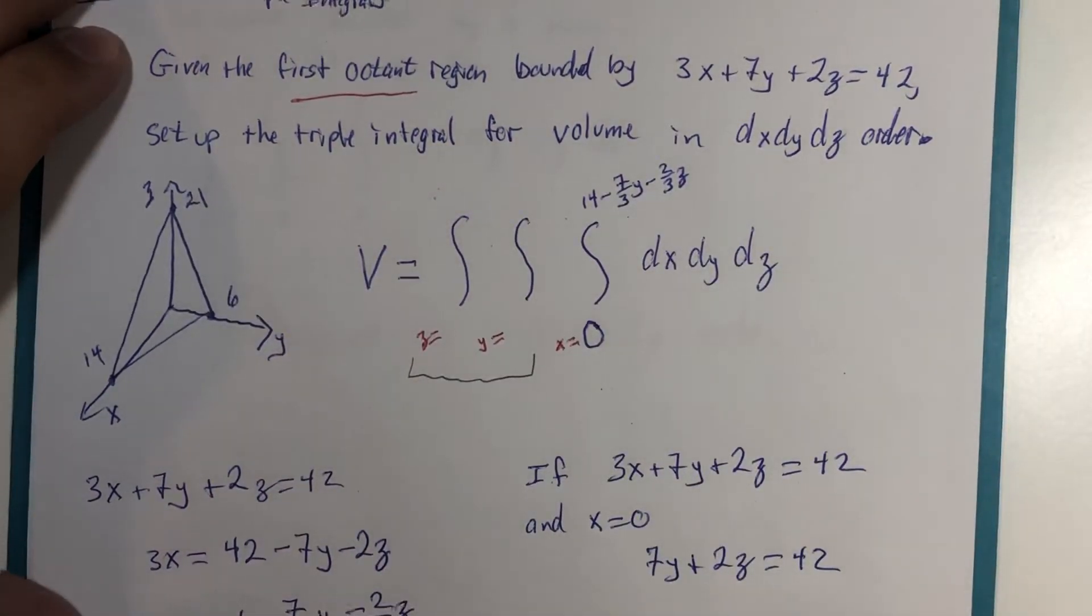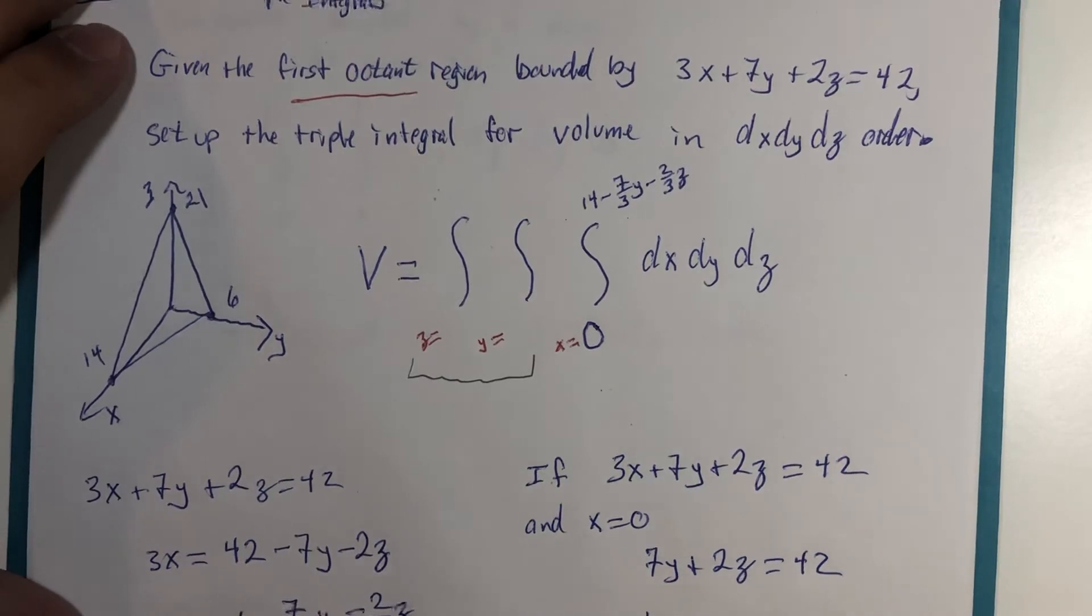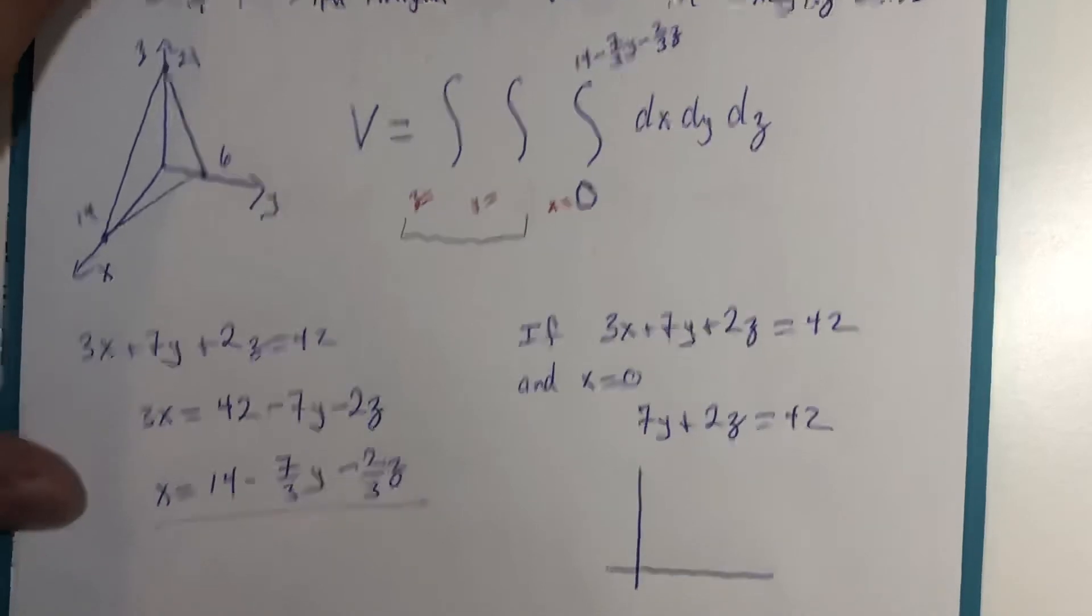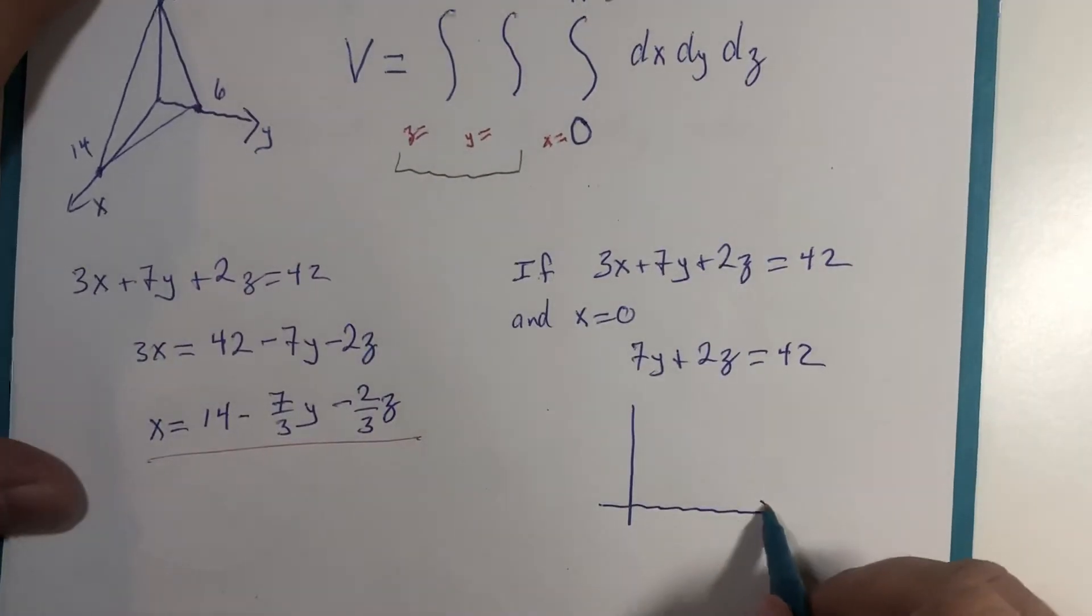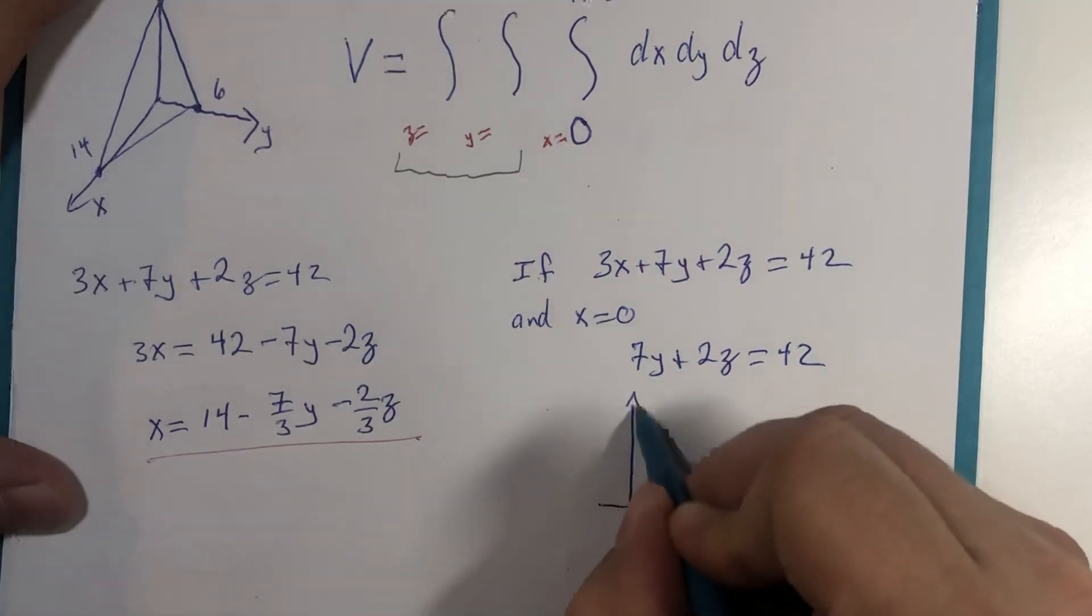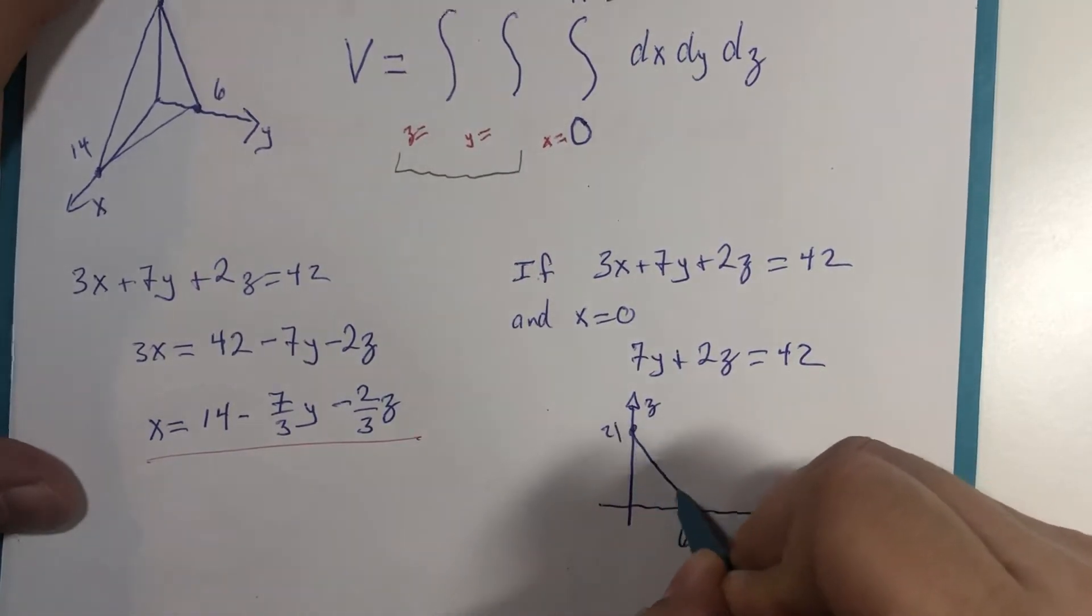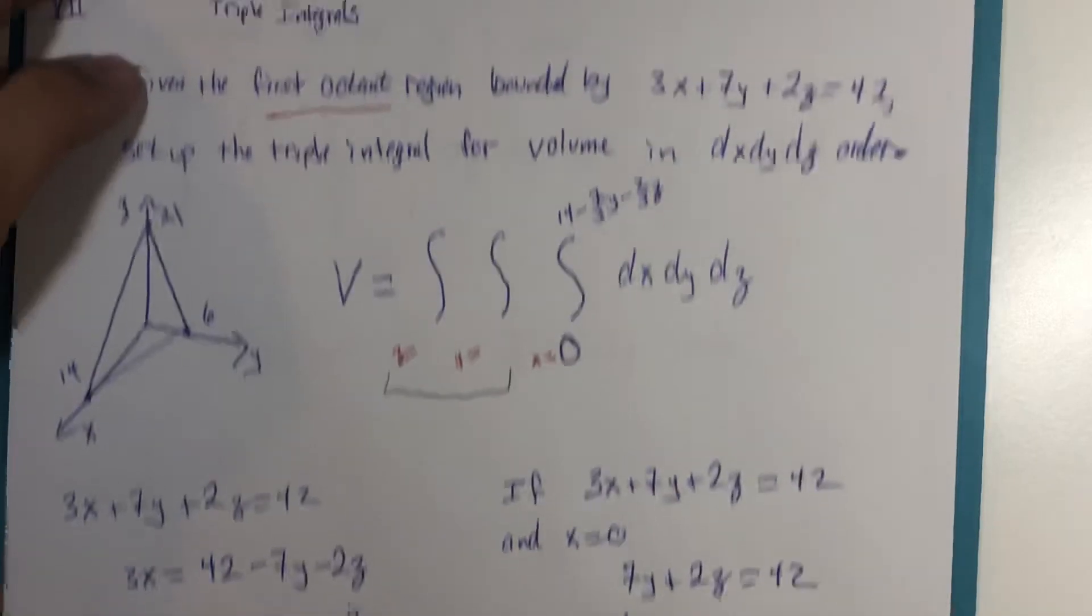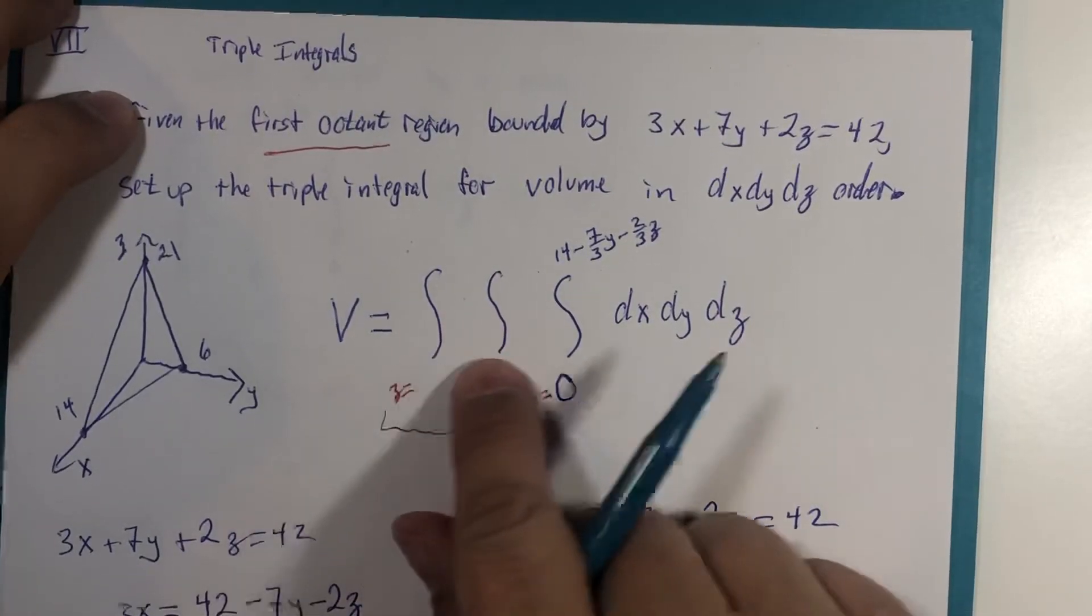So in that yz plane we would see y-axis was 6, z-axis was 21. So that triangle there would be our two-dimensional region for the remaining part of our integral.